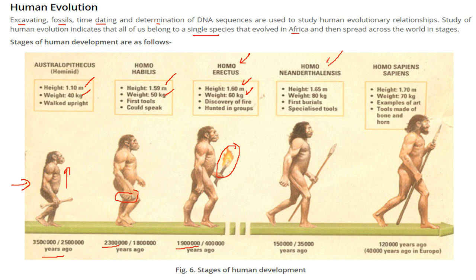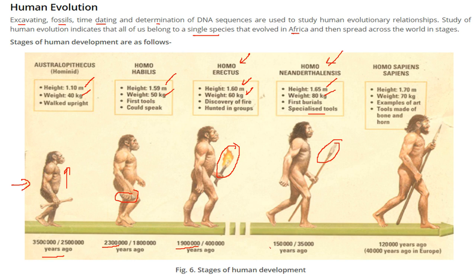Homo neanderthalensis: height 1.65m, weight 80kg. They buried those who died and were able to make specialized tools for hunting — 150,000 years ago.